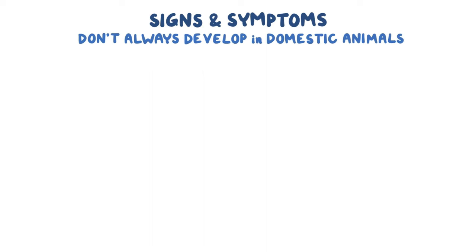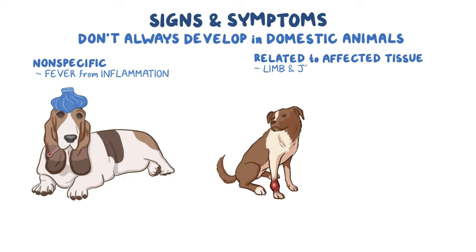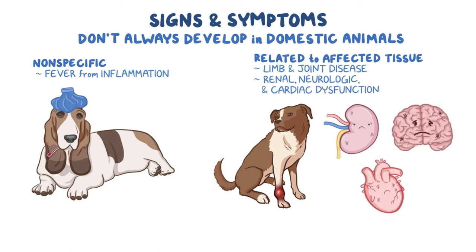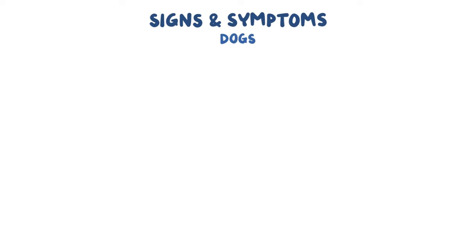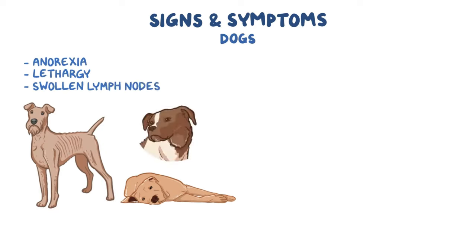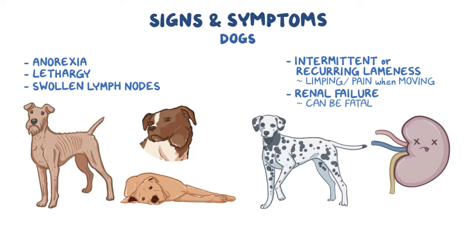Clinical signs and symptoms don't always develop in domestic animals, but if they do, they can be nonspecific, like a fever from inflammation, or they can be related to the affected tissue, like limb and joint disease, and renal, neurologic, and cardiac dysfunction. Dogs also commonly have anorexia, lethargy, swollen lymph nodes, and intermittent or recurring lameness with limping or pain when moving. They can also have renal failure, which can be fatal.